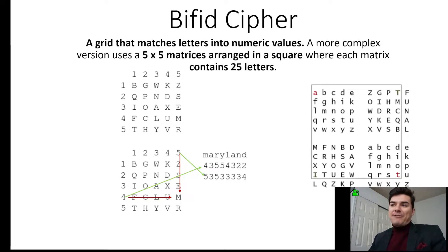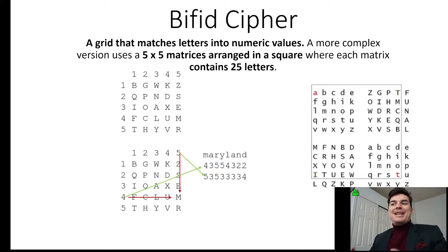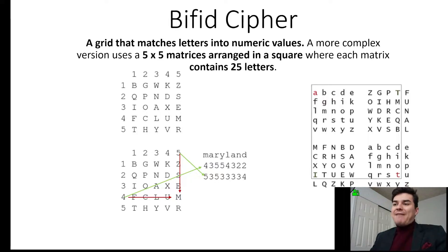The bifid cipher is a grid that matches letters into numeric values. It's a 5x5 matrix, so just remember that it matches letters into numeric values and it's a 5x5 matrix.